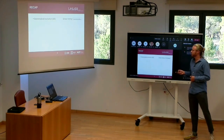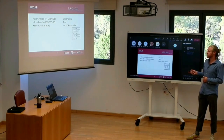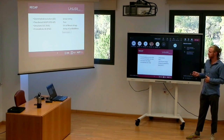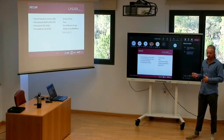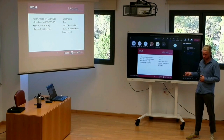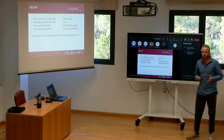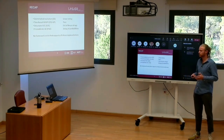A quick recap: we have Grammatical Evolution with linear strings; tree-based Grammar-Guided Genetic Programming with trees; Structured Grammatical Evolution with lists of linear strings; and Probabilistic GE with strings of probabilities plus grammar updates. The problem is that currently there is no framework that supports all of these representations — and most comparisons between representations are done using different frameworks from different groups.